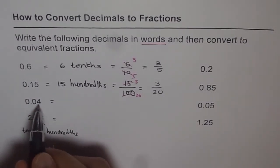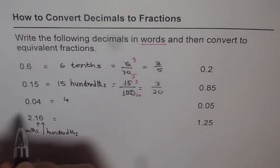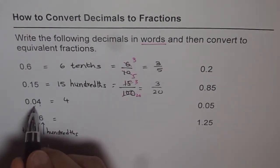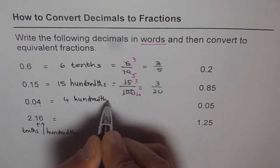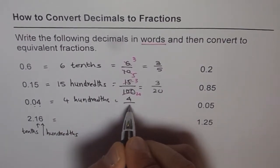So this one is 4 hundredths. So there are 2 places. That may be 0. 4 hundredths.